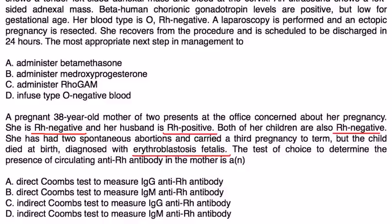The test of choice to determine the presence of circulating anti-Rh antibody in the mother is... Remember which antibody are we talking about? We're talking about IgG. That's the antibody that is produced by the mother in response to Rh positive fetal red blood cells.